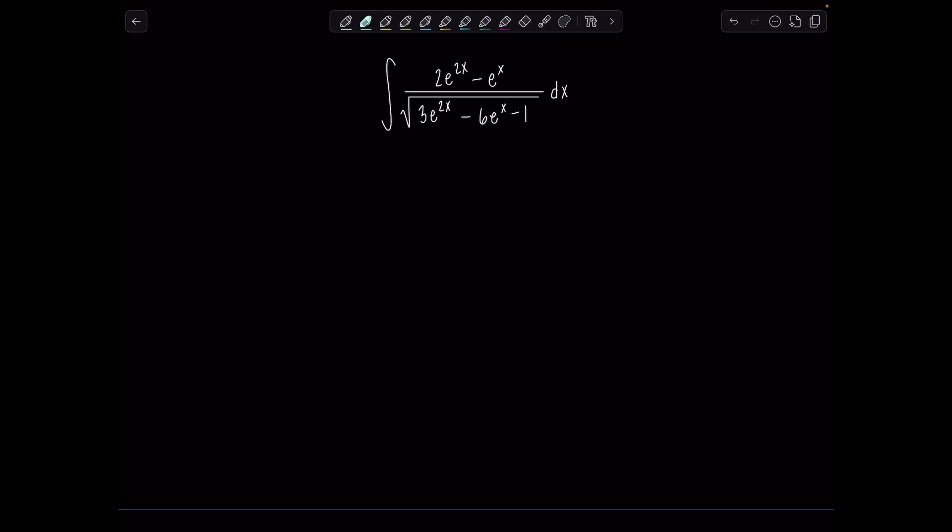If you notice in the numerator, you can factor out an e to the x, and then you have 2e to the x minus 1 over 3e to the 2x minus 6e to the x minus 1 dx. So if I let u equal e to the x, then du is e to the x dx. That's perfect, right? Because here's e to the x dx, that'll be du.